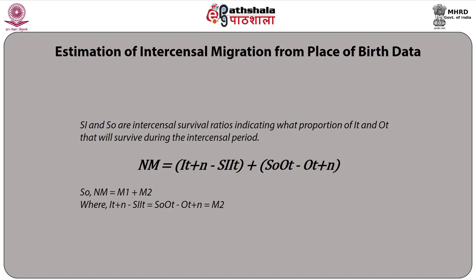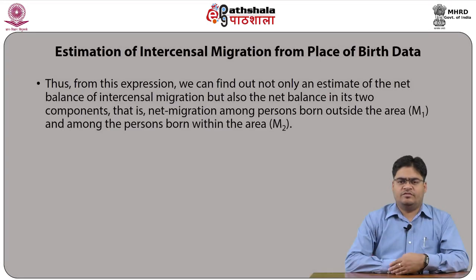Net migration NM = M1 + M2, where M1 = I(t+n) - S_i × I(t), and M2 = S_o × O(t) - O(t+n). From this expression we can find not only an estimate of the net balance of inter-censal migration, but also its two components: net migration among persons born outside the area (M1) and among persons born within the area (M2).